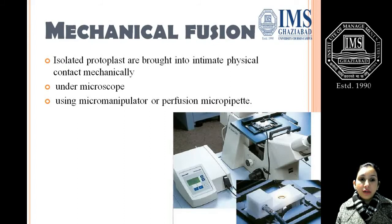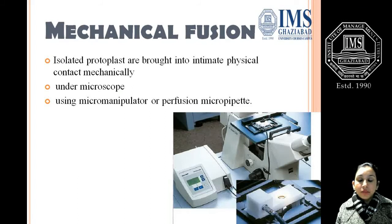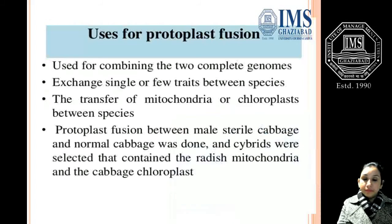In mechanical fusion, isolated protoplasts are brought into intimate physical contact mechanically. They are observed under a microscope and fused using a micromanipulator or perfusion micropipette. The slide shown here illustrates how the microscope and the instrument are used in this process.